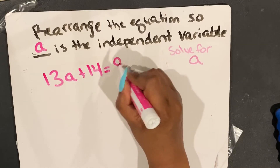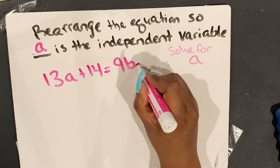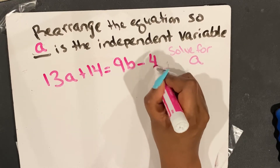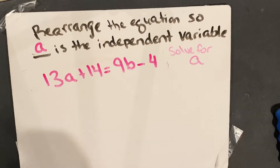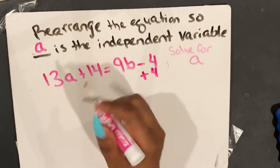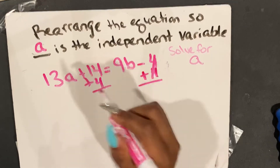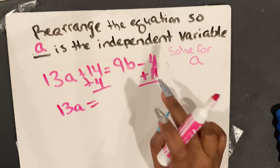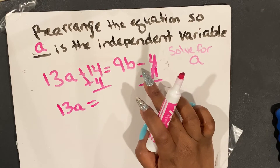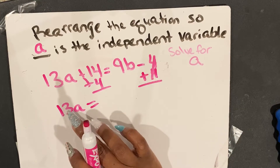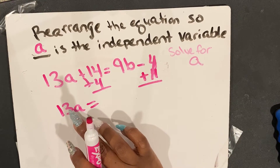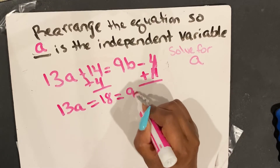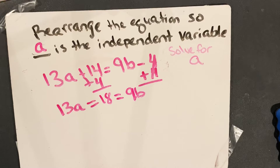This is when we are rearranging the equation so that we can isolate the independent variable. We want to find out what is our independent variable — we want that one to be the one that stands out. So when it's asking you for a specific variable, you're going to look at the variable it is not asking you for and solve for that one. So it's asking me to rearrange the equation so that m is the independent variable, which means I need to solve for n.